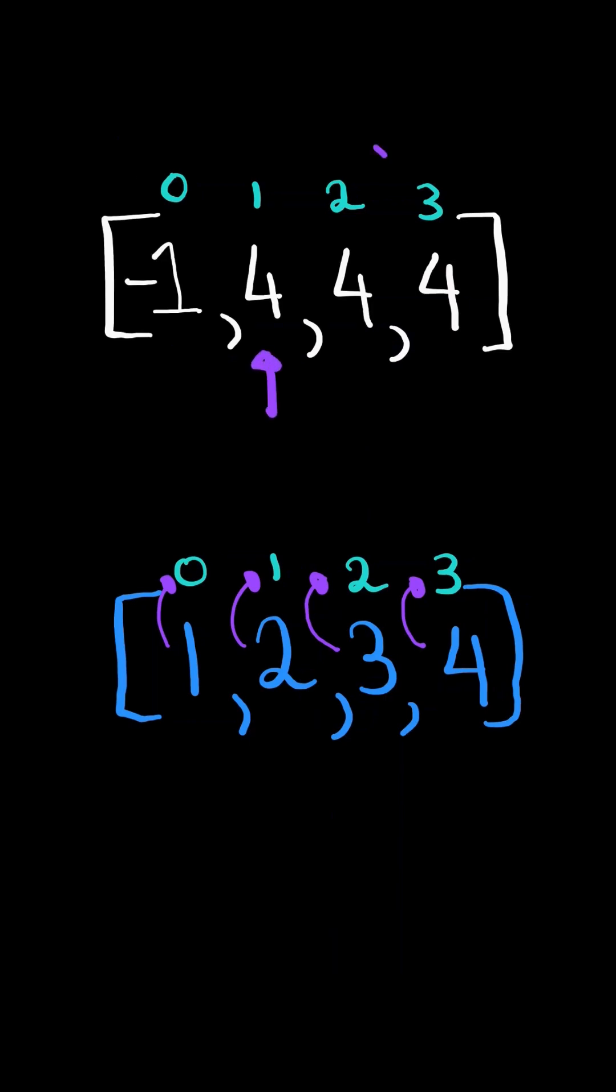The value 4 maps to index 3, so we mark the value at index 3 negative. Again, 4 maps to index 3. The value at index 3 is already negative, so we leave it. If the value is negative, we can skip it.